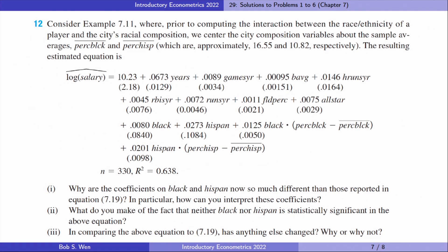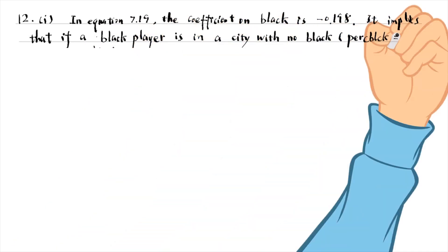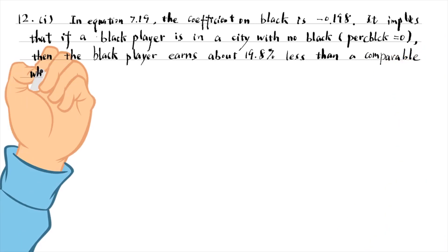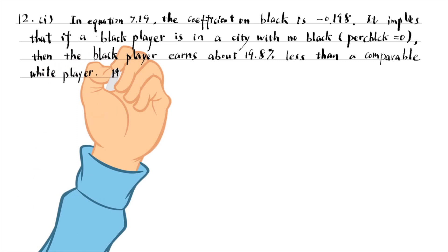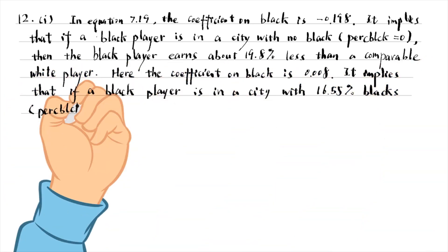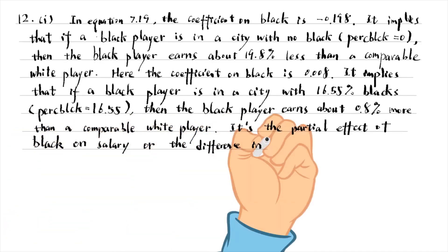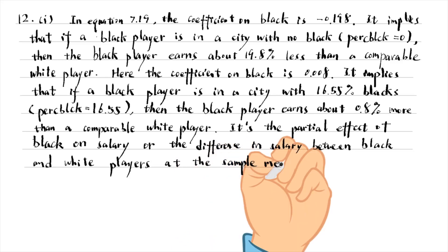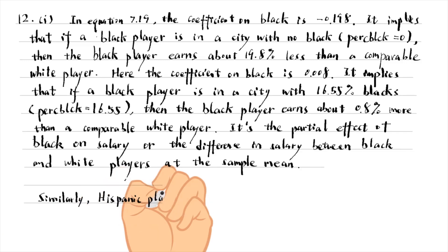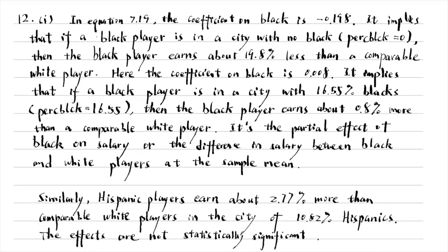Let's solve problem 12. In equation 7.19, the coefficient on black is minus 0.198. It implies that if a black player is in a city with no blacks, then the black player earns about 19.8% less than a comparable white player. Here, the coefficient on black is 0.008. It implies that if a black player is in a city with 16.55% blacks, then the black player earns about 0.8% more than a comparable white player. It is the partial effect of black on salary, or the difference in salary between black and white players, as the sample mean. Similarly, Hispanic players earn about 2.77% more than white players in the city of 10.82% Hispanics. The effects are not statistically significant.